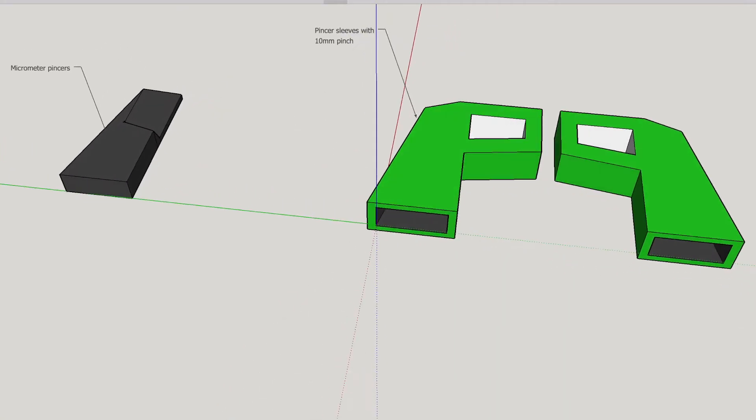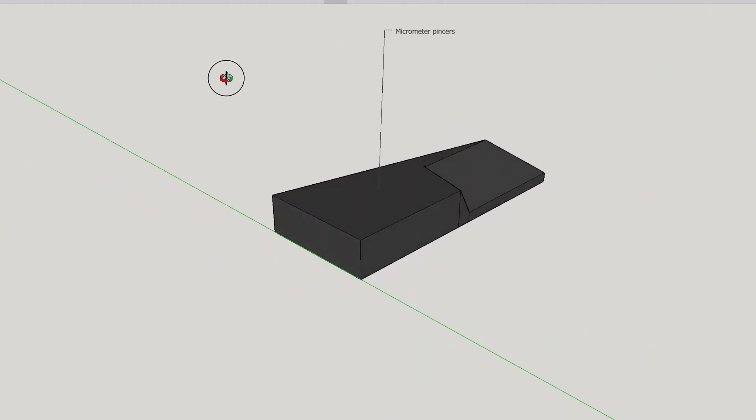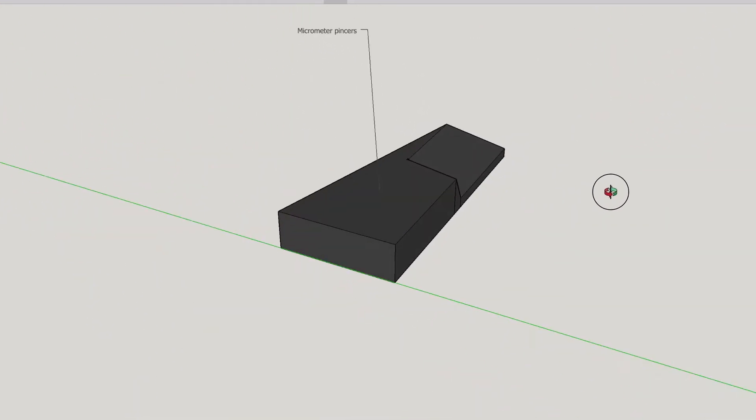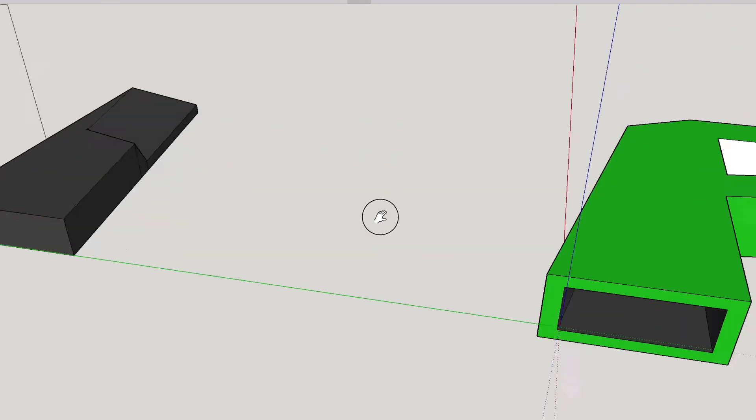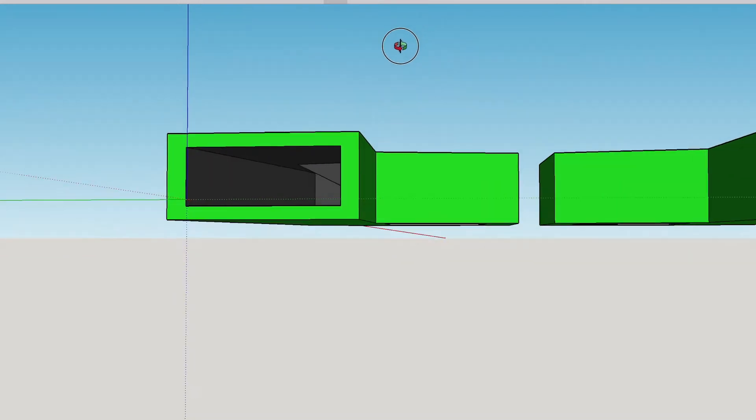I created the 3D models in SketchUp, which is free and easy to use. First, I modeled the micrometer's prongs. Then, I created the sleeves and hollowed out a hole for the prongs to fit into.